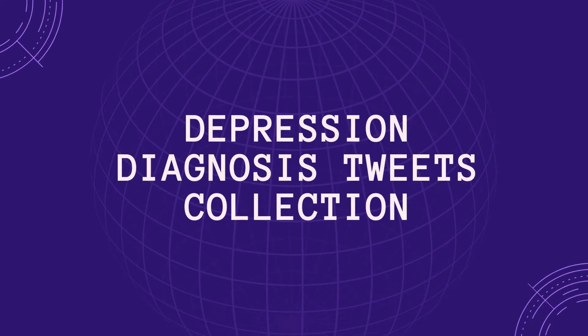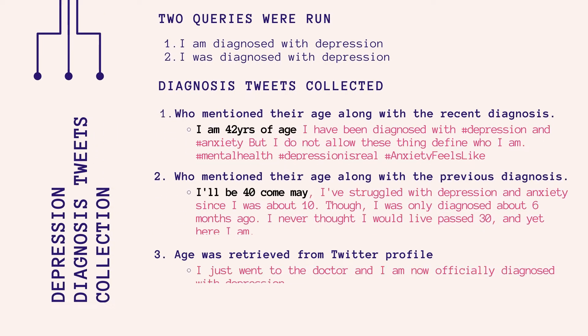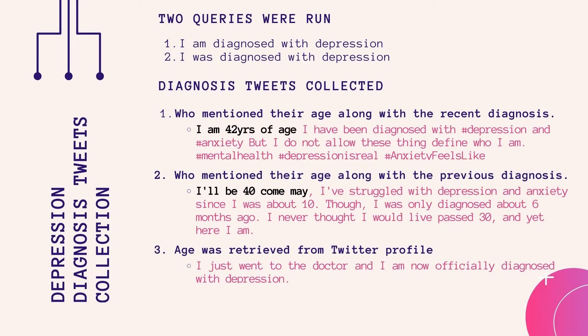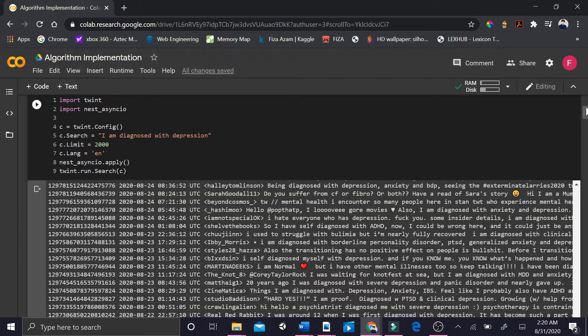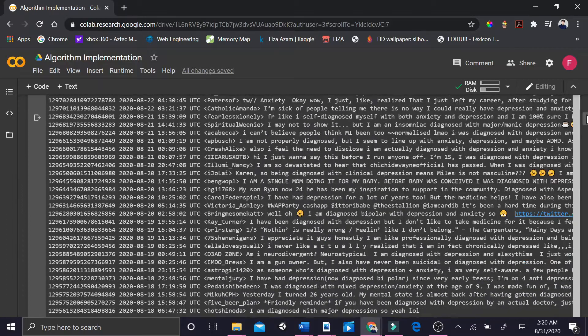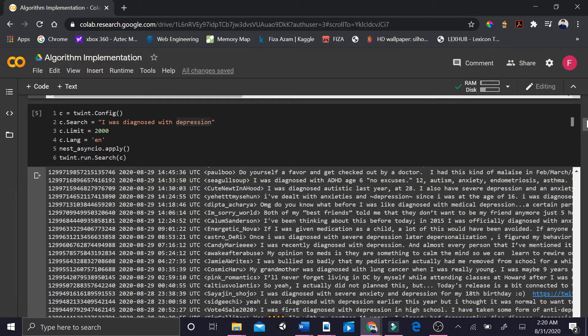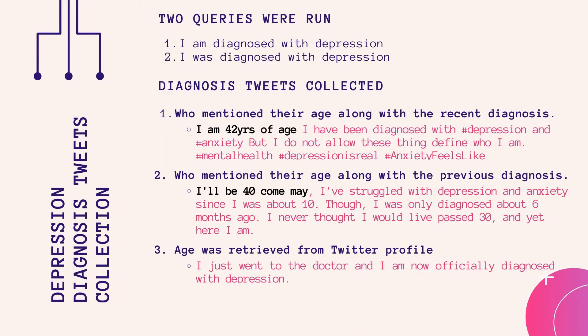For collecting tweets of depressed users, we applied a similar approach as G. Coppersmith et al. by running two queries: 'I am diagnosed with depression' and 'I was diagnosed with depression.' Our dataset at this point contained 400 diagnosis tweets of users who mentioned their age along with their recent or previous diagnosis, or whose age was retrieved from their Twitter profiles.